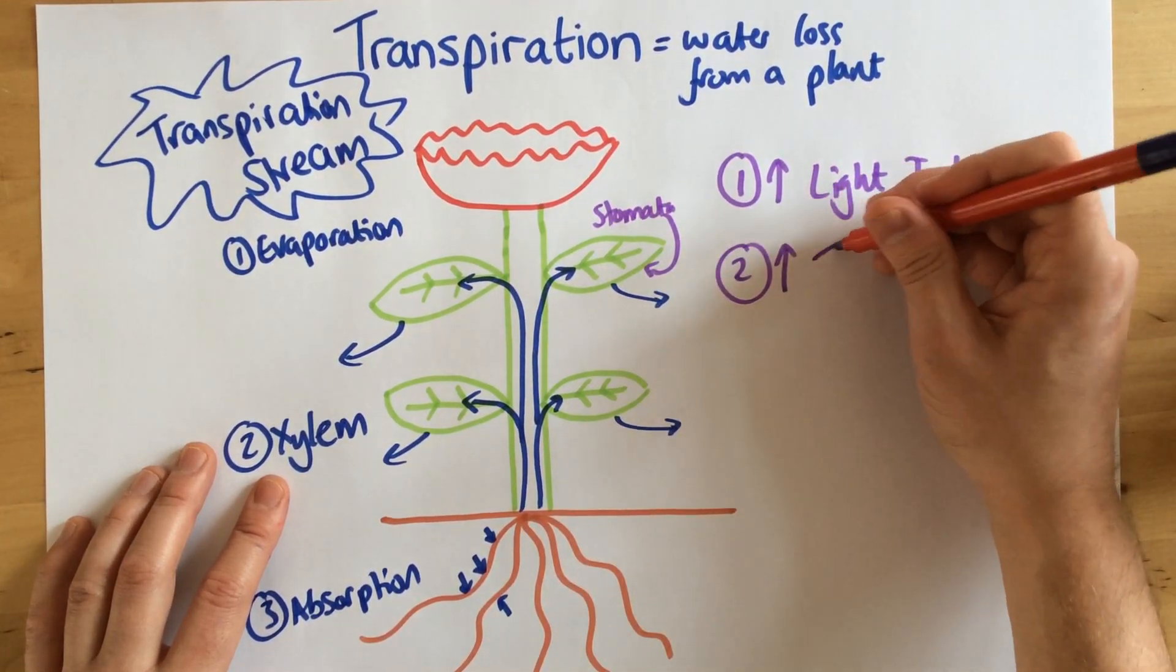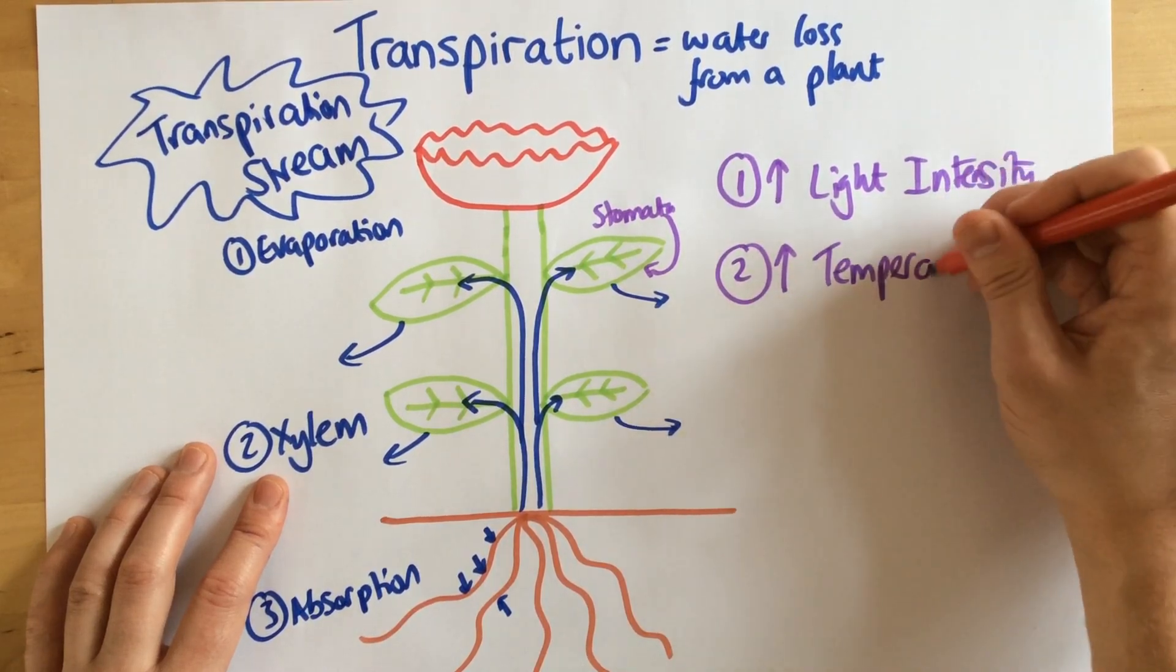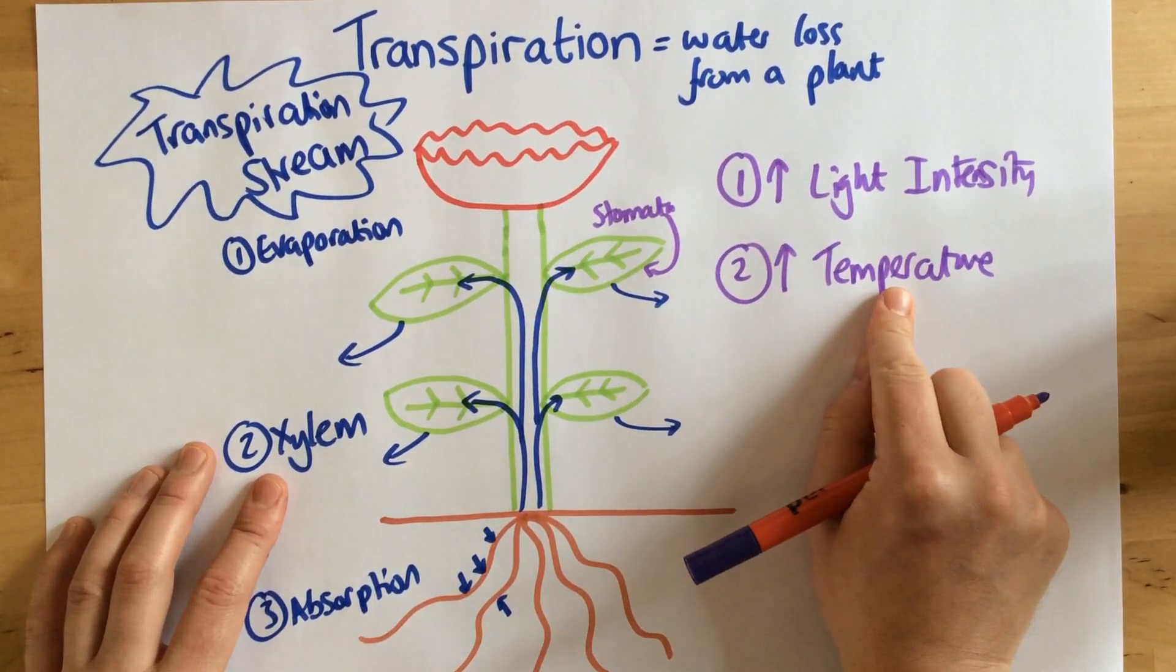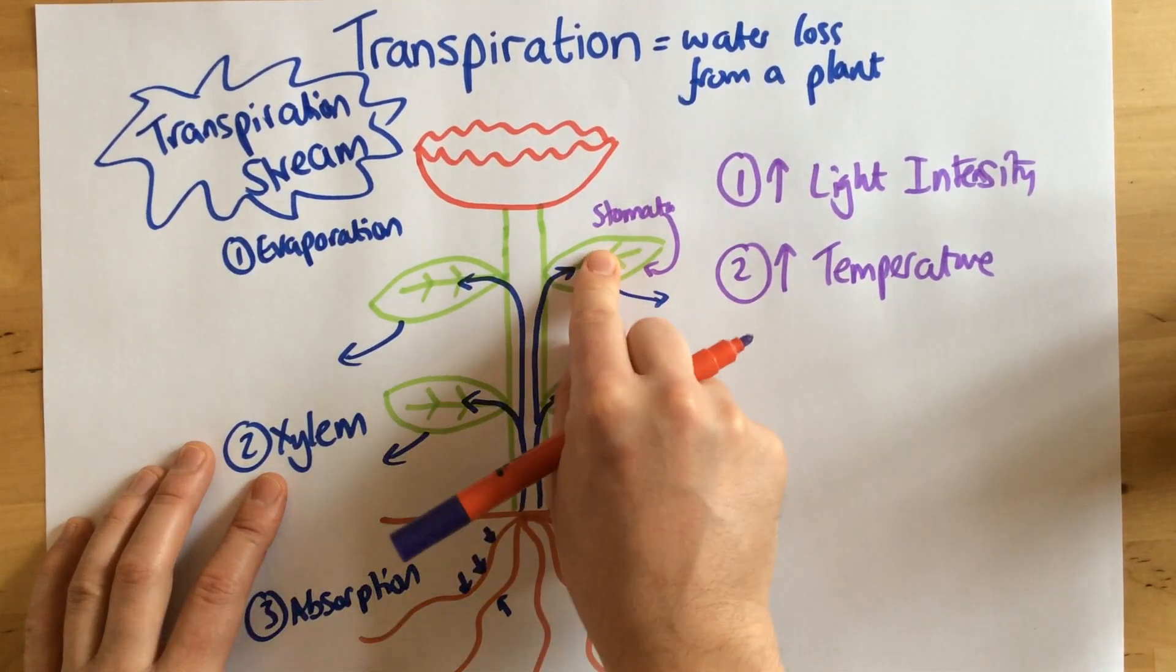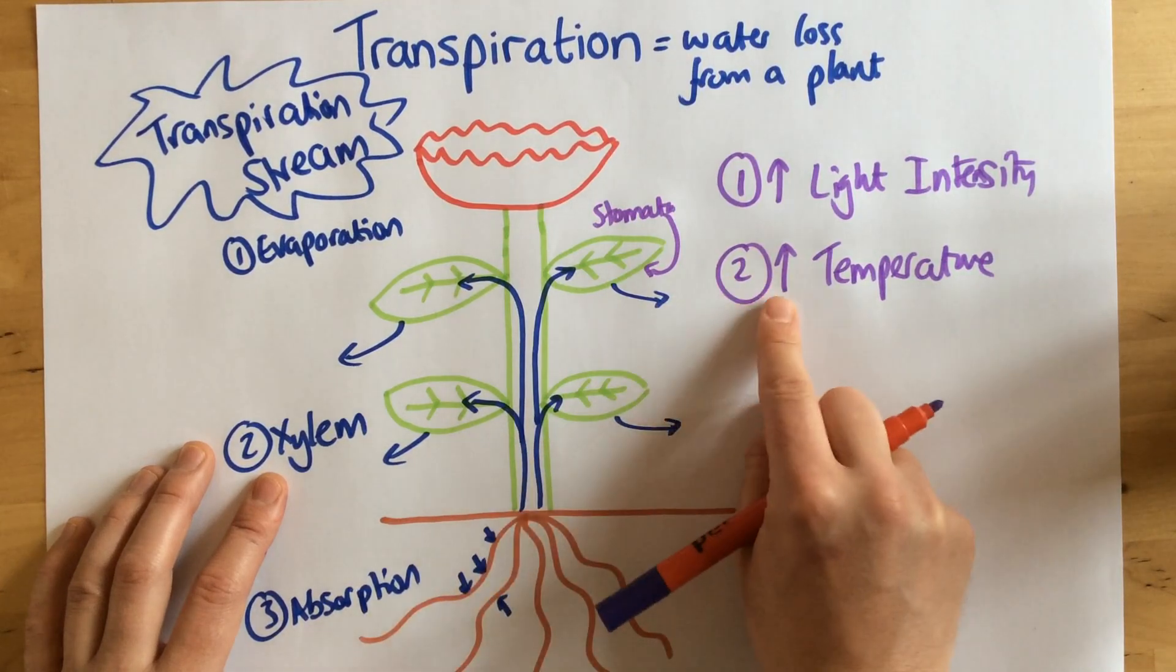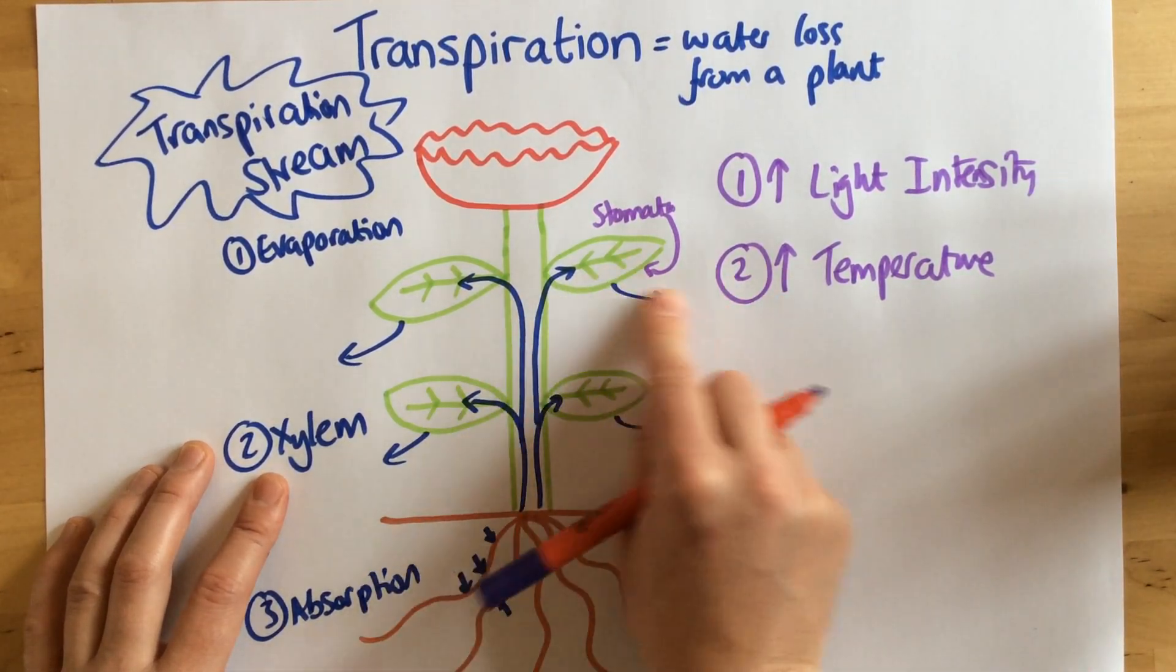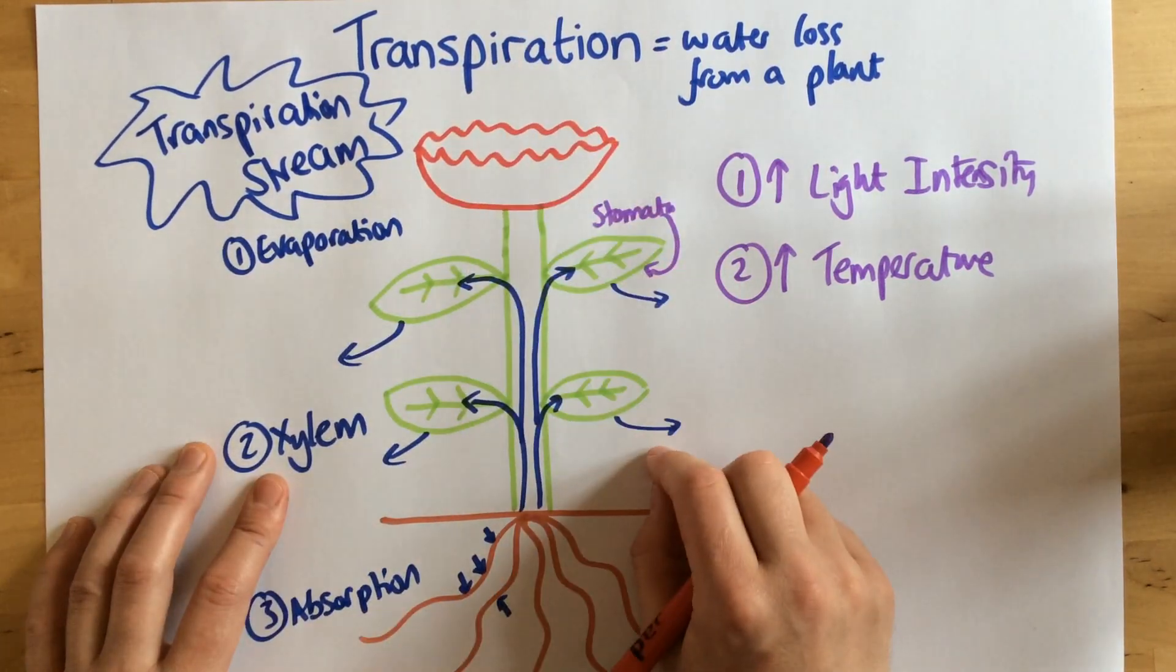Secondly, a high temperature. Now the reason for that is, if there's a high temperature, the water particles have more energy to evaporate and diffuse out of the stomata. So the higher the temperature, the higher the energy of the particles, therefore the faster the rate of transpiration.